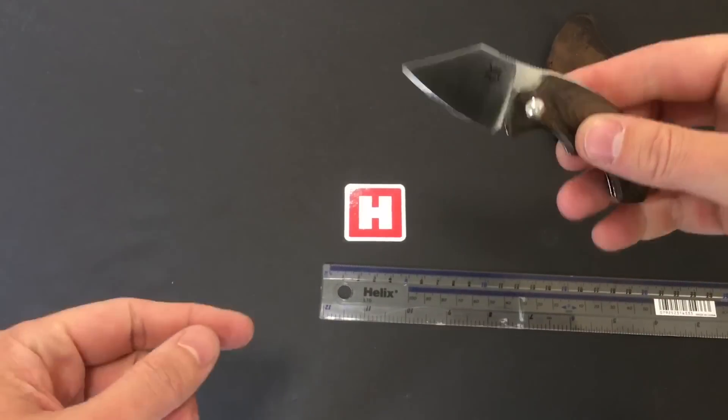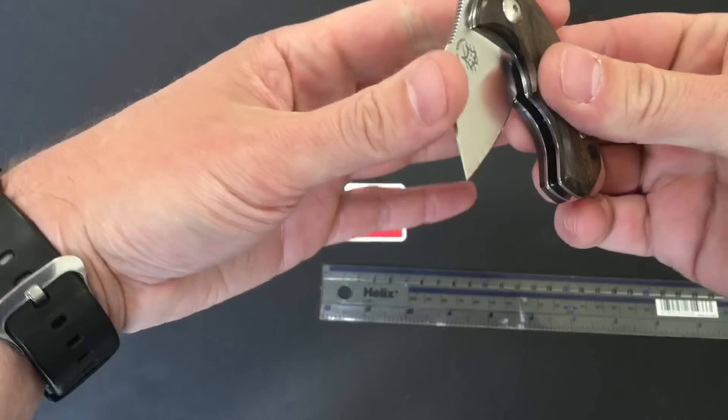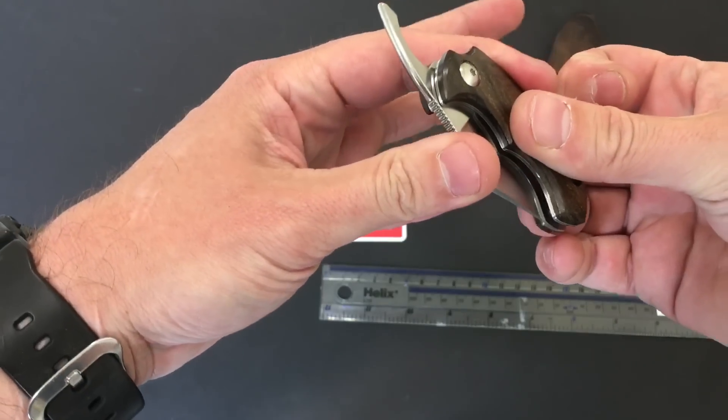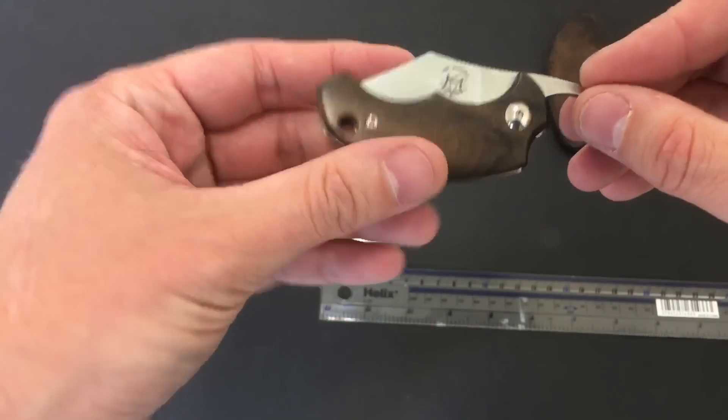Really good cutting power from that Wharncliffe style blade. Fold him back up. Nice smooth action. Obviously there is friction there so it's going to be stiff because you wouldn't want that flopping around all over the place.